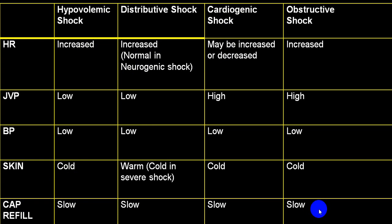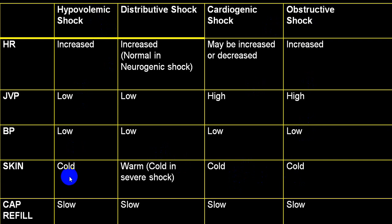The most important distinguishing feature is skin temperature: warm skin in warm/distributive shock — classical examples being septic shock, neurogenic shock, anaphylactic shock. Cold clammy skin in cardiogenic, obstructive, and hypovolemic shock. JVP normal or reduced in distributive shock and hypovolemic, while elevated in cardiogenic and obstructive. Clinically you can suspect what is the probable pathophysiology of the shock stage — this is a very, very useful clinical assessment.